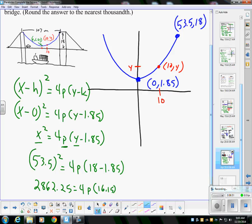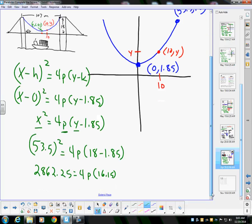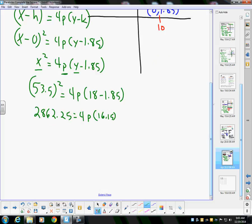Therefore, if I were to multiply 4 times 16.15, so 16.15 times 4 is 64.6. So here's what I have algebraically: 2862.25 = 64.6p.